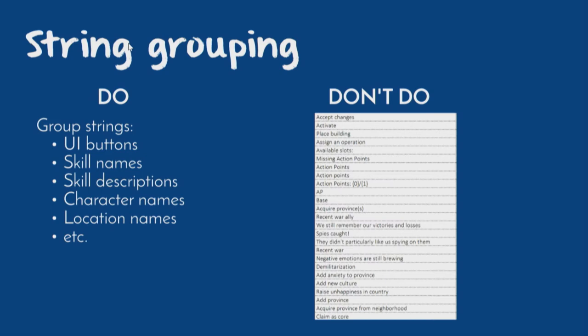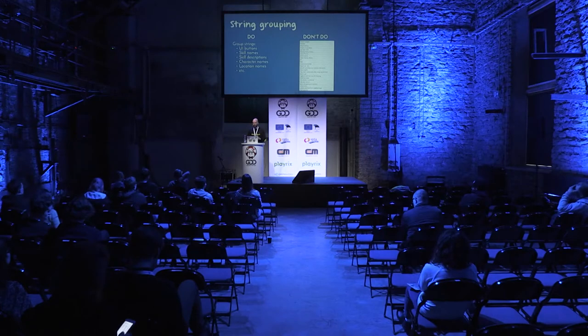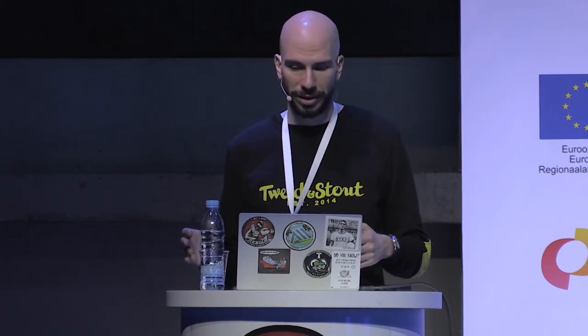Bill names, skill descriptions, character names, location names and so on — they go one after another. On the right side, you can see an example of a localization kit that is sorted more or less in alphabetical order. You know, you start to translate interface, then you get into a character name, then you get a location name — you need to switch the context in your head constantly each couple of minutes. And that is basically quite painful and causes lots of stress and lots of mistakes.